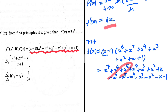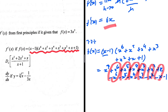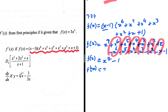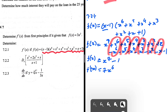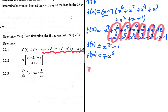Looking at the terms, x to the power 6 minus x to the power 6, x to the power 5 minus x to the power 5, and so on — all middle terms cancel. We ultimately end up with f of x equals x to the power 7 minus 1. Differentiating, f prime of x equals 7x to the power 6.